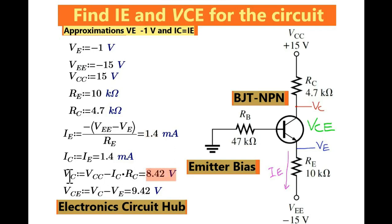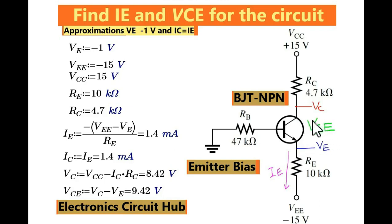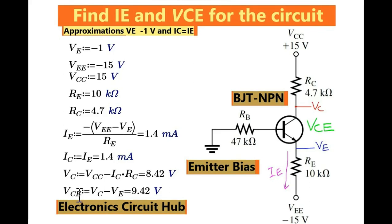So this is the VC voltage. Now you have VC and you have VE; you can look at this circuit and easily find the value of VCE. How will you find the value of VCE? VCE equals VC minus VE, so VCE equals 8.42 minus minus 1 volt, which gives you 9.42 volt. So you have now solved this problem and got IE equals 1.4 milliampere and VCE equals 9.42 volt.